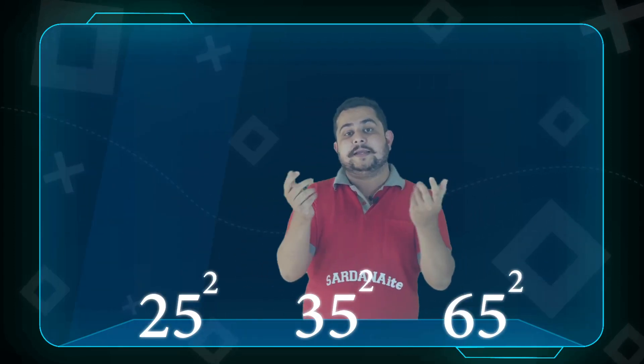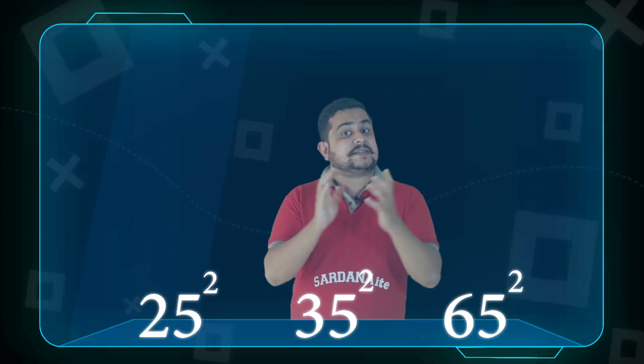What is the square of 25? What is the square of 35? There are two numbers — 25, 35, and 65 — and you have to calculate the square of these three numbers. How can you calculate these numbers in 6 seconds? I'll tell you.